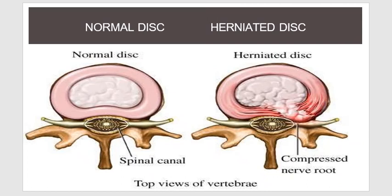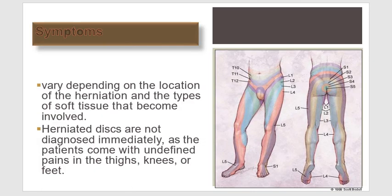This image shows a normal disc on the left and a herniated disc compressing the nerve root on the right. Symptoms vary depending on the location of the herniation and the type of tissue involved. Herniated discs are not diagnosed immediately as patients present with undefined pain in the legs, thighs, knees, or feet — these are presentations of compression of nerves at various levels.